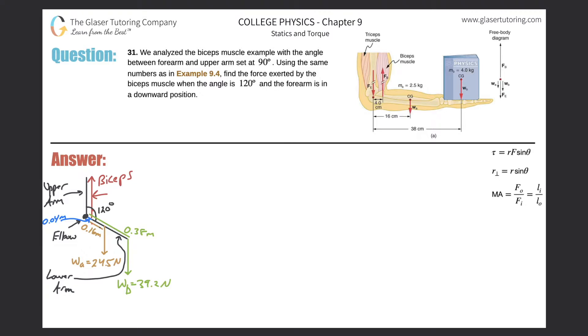Number 31. We analyze the biceps muscle example with the angle between the forearm and upper arm set at 90 degrees. Using the same numbers as in example 9.4, find the force exerted by the biceps muscle when the angle is 120 degrees and the forearm is in a downward position.